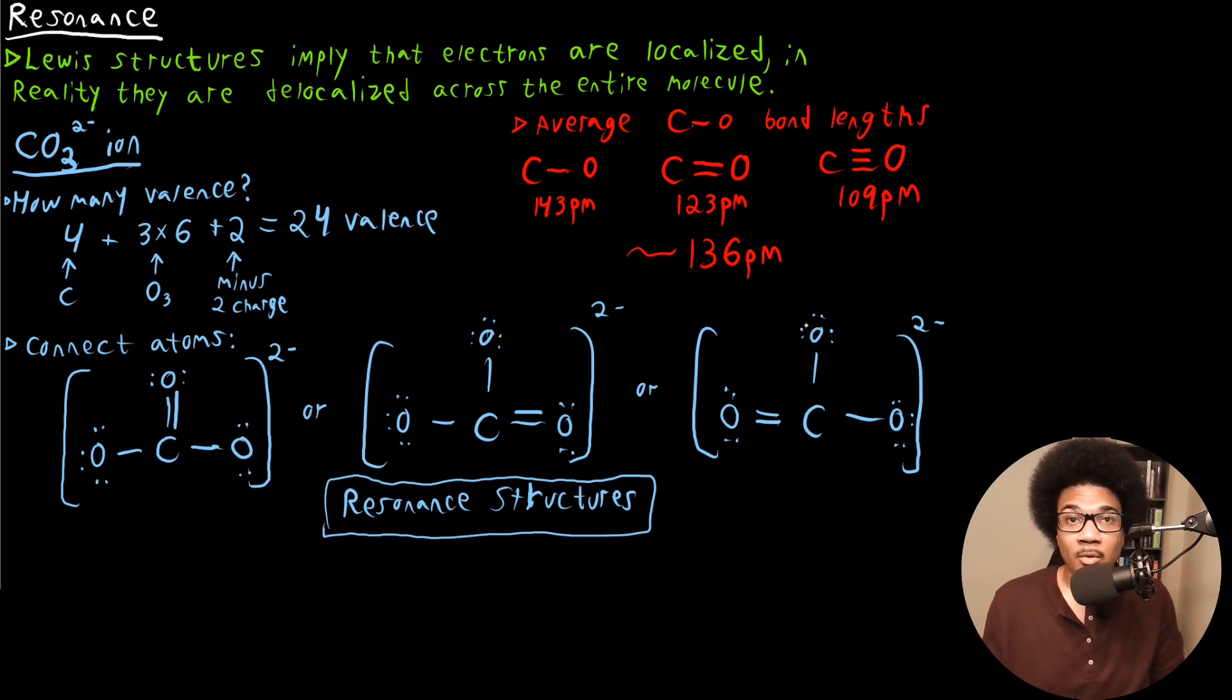So a lot of times you'll be asked questions to this regard of, you know, draw all of the possible resonance structures for a given molecule. And you'll be tasked with figuring out how many different ways can you distribute the electrons in this molecule while still maintaining the same valid structure. And the structure is not different from a structural standpoint. So that's what we've done here. This CO3 2 minus would have three resonance structures with the double bond being distributed between each of the oxygens.